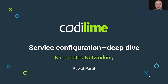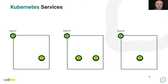Hi, my name is Pavel Parol. I'm a solutions architect at Codelime. In this video, you'll see in detail how services are implemented in Kubernetes and how you can configure some aspects of their behavior, such as external traffic policy and internal traffic policy.